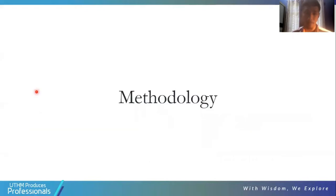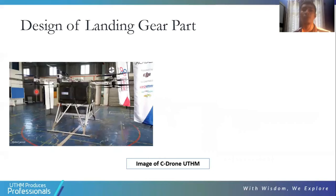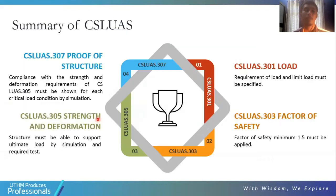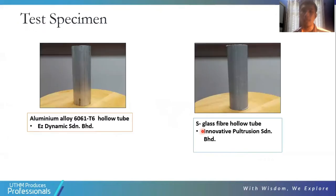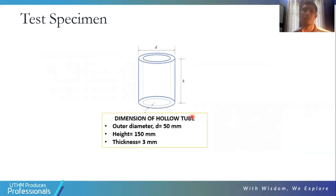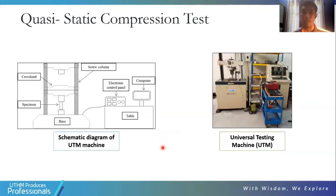The methodology involves the design of the landing gear pipe for the UTHM cargo drone. The test specimens consist of an aluminium alloy 6061 hollow tube and an S-glass fiber hollow tube, with dimensions of 10 mm diameter, 150 mm height, and 3 mm thickness.